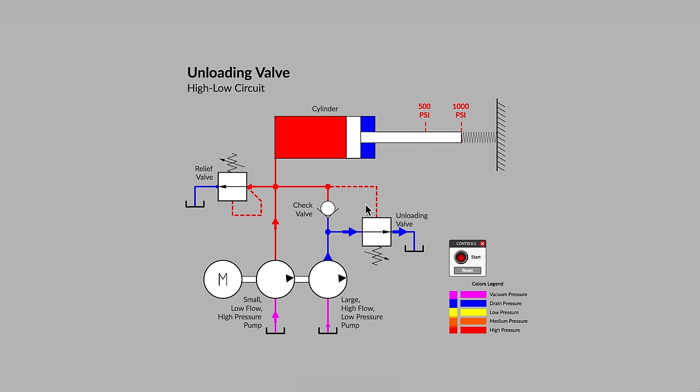When the unloading valve opens, we only want the flow from the right-hand pump to pass through. The check valve prevents flow from the left-hand pump from escaping to tank.